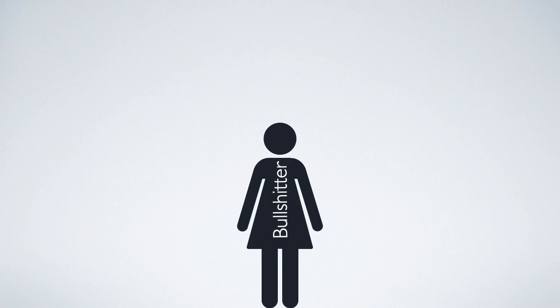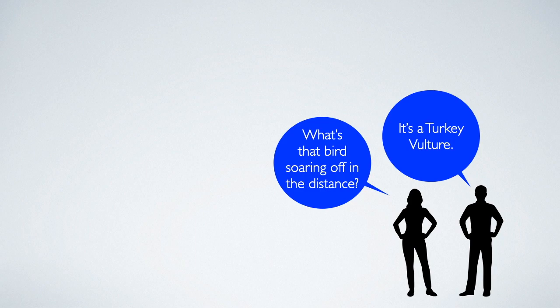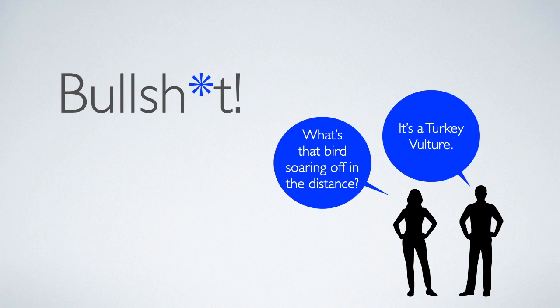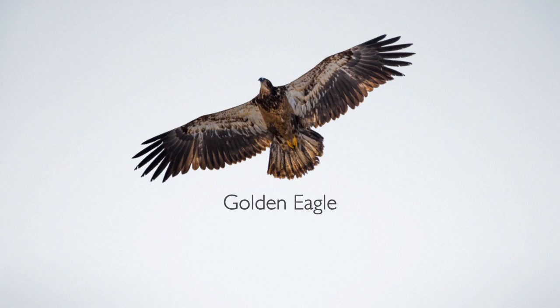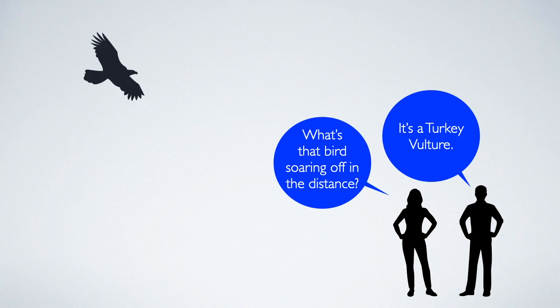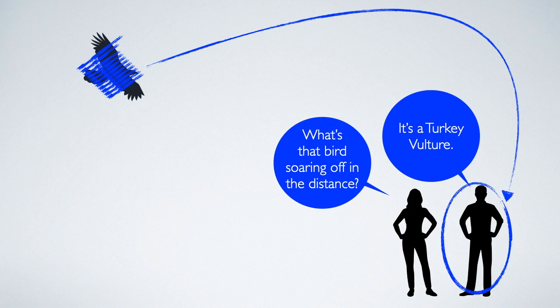Back to the birds one last time. Let's say I'm leading a group of birders and it's your first time out. You ask me, 'hey, what's that bird soaring over there in the distance?' Now, I have no idea. But as the group leader, I don't want to admit that. So without losing a beat, I confidently say, 'that is a turkey vulture.' According to Frankfurt, this is classic bullshitting. Because I don't care about the truth — maybe it's a turkey vulture and maybe it isn't. What I care about is managing the perceptions of the group and saving face. So if it is a turkey vulture, fine. And if it's not, well, that's fine too. Because my goal was not to get others to believe something true or false about the bird. My goal was to manage the others' perception of me. And that is the hallmark of bullshitting.